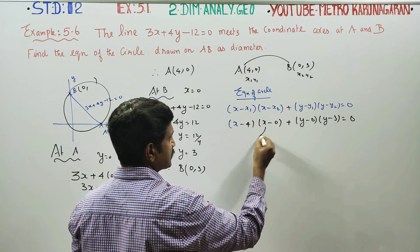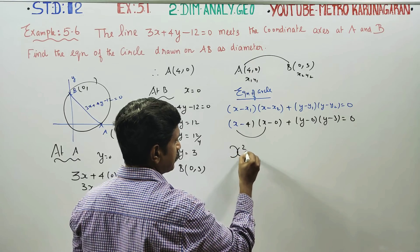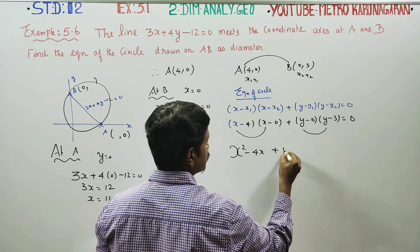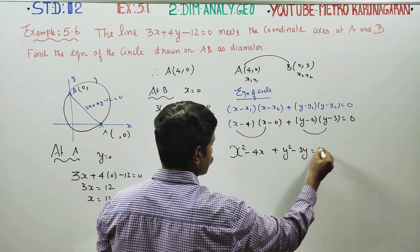Simplifying: (x - 4)(x) + (y)(y - 3) = 0, which gives us x² - 4x + y² - 3y = 0.